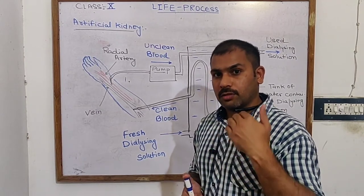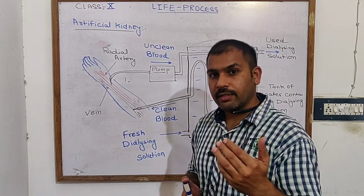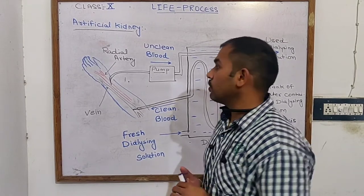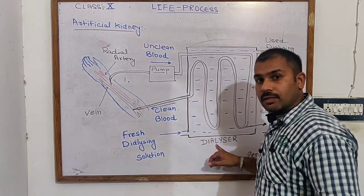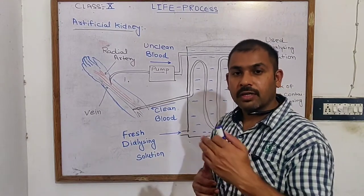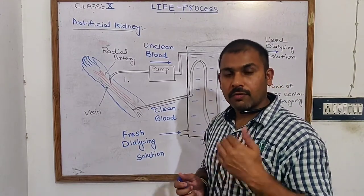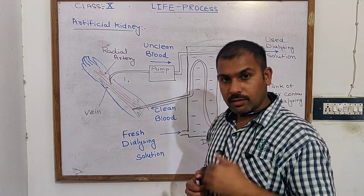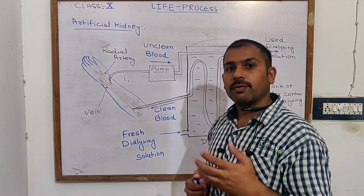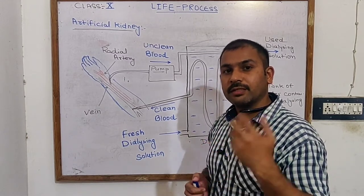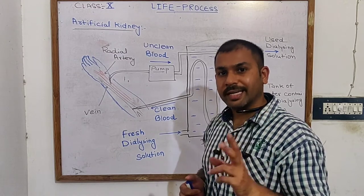The requirement is the dialyzer. The dialyzer is an artificial kidney, which is required to filter the blood of a patient whose both kidneys are damaged.